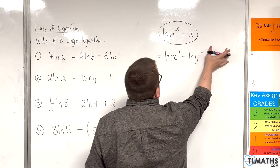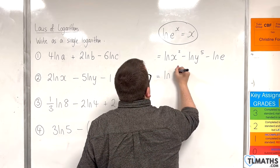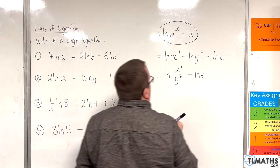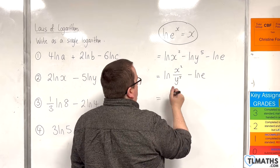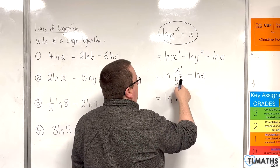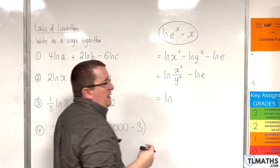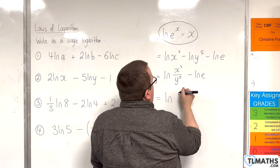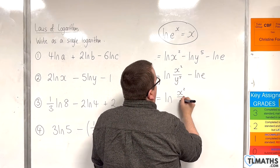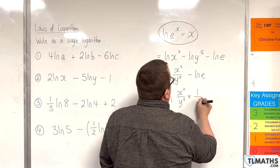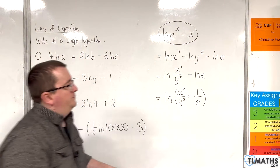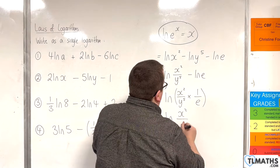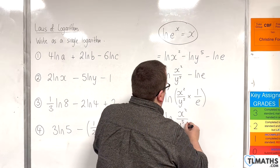Working from left to right, ignoring the final term, we apply the quotient rule to get the natural log of x squared over y to the 5. Then applying the quotient rule again with the natural log of e — dividing by e is the same as multiplying by 1 over e — so we get x squared over y to the 5 times 1 over e.